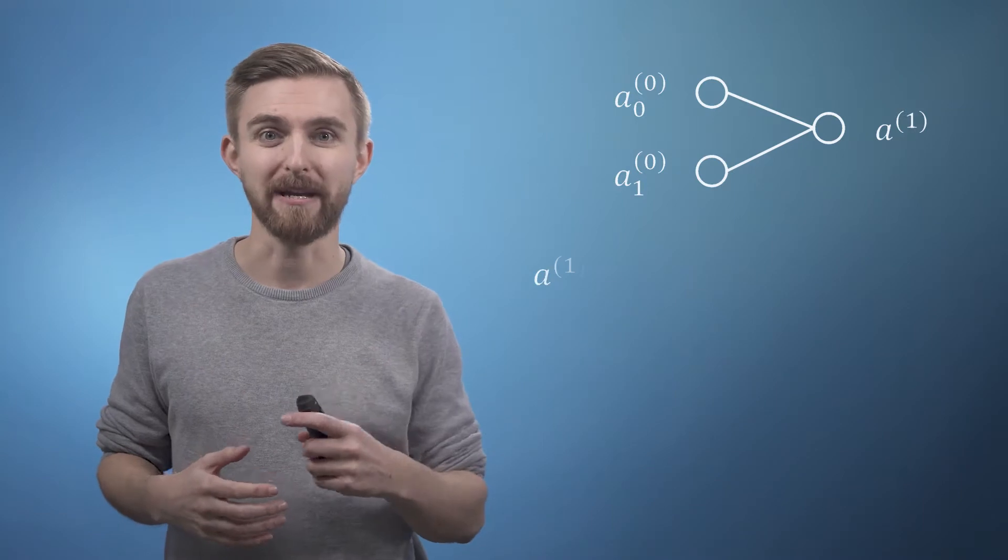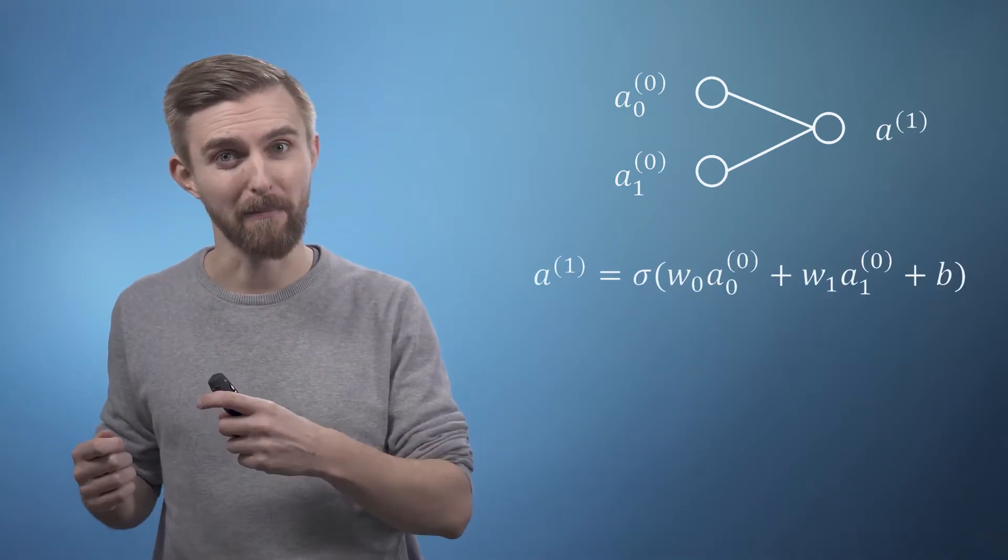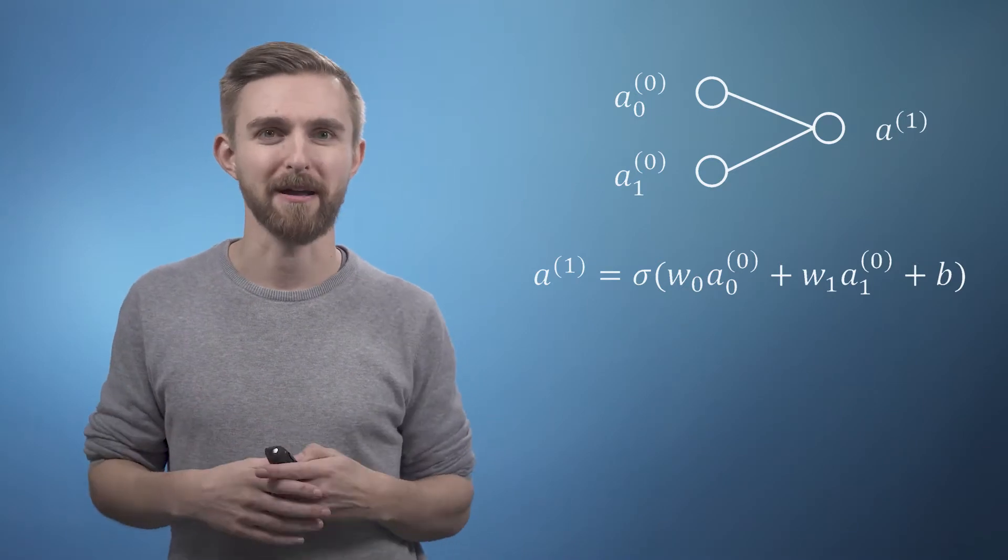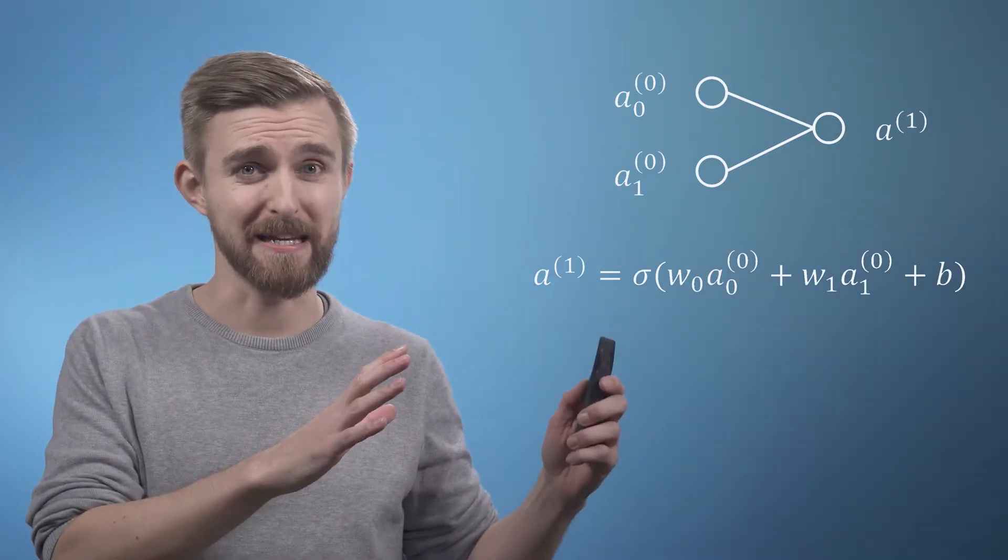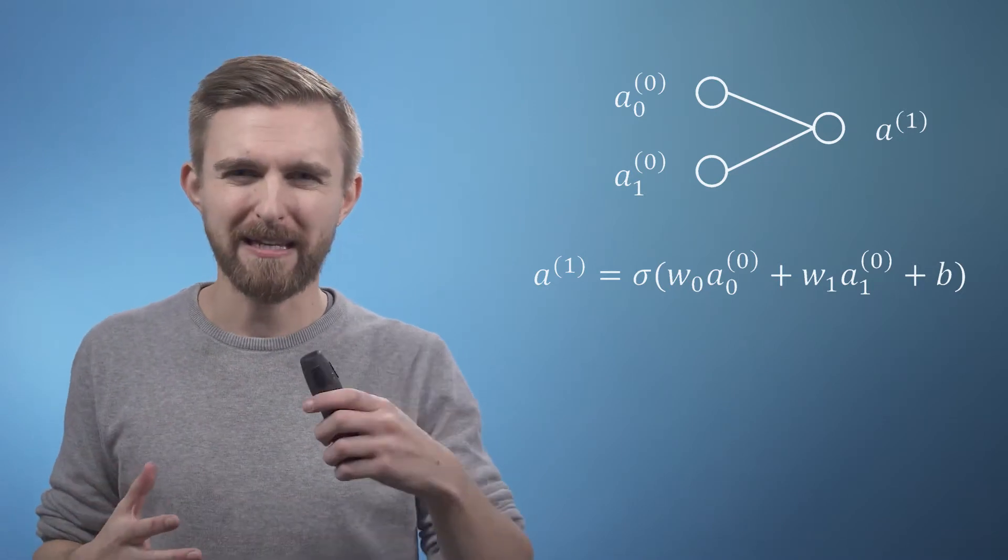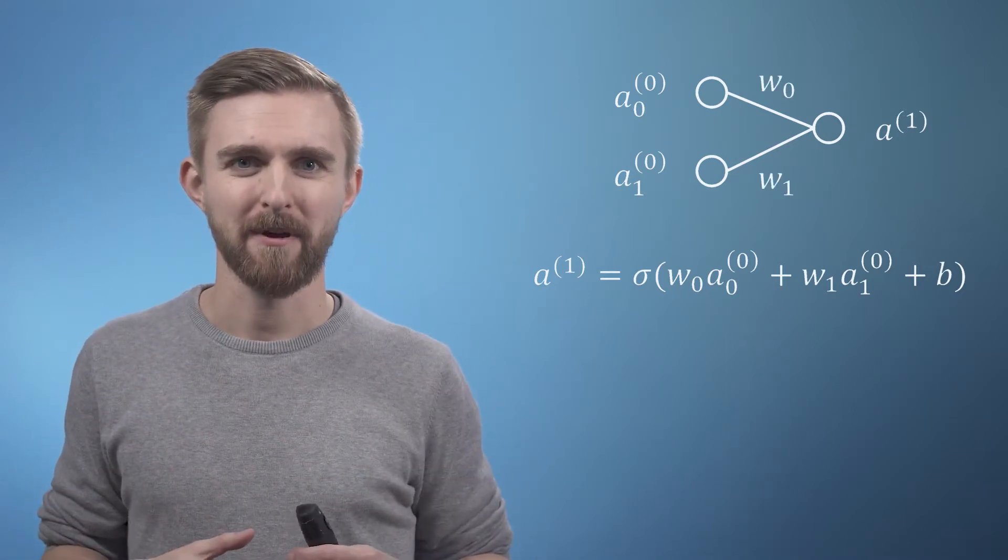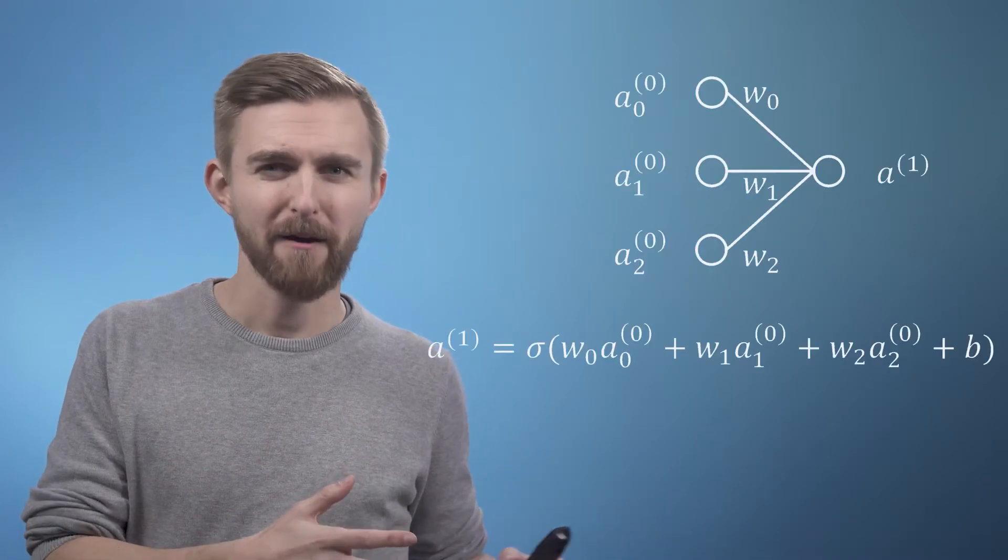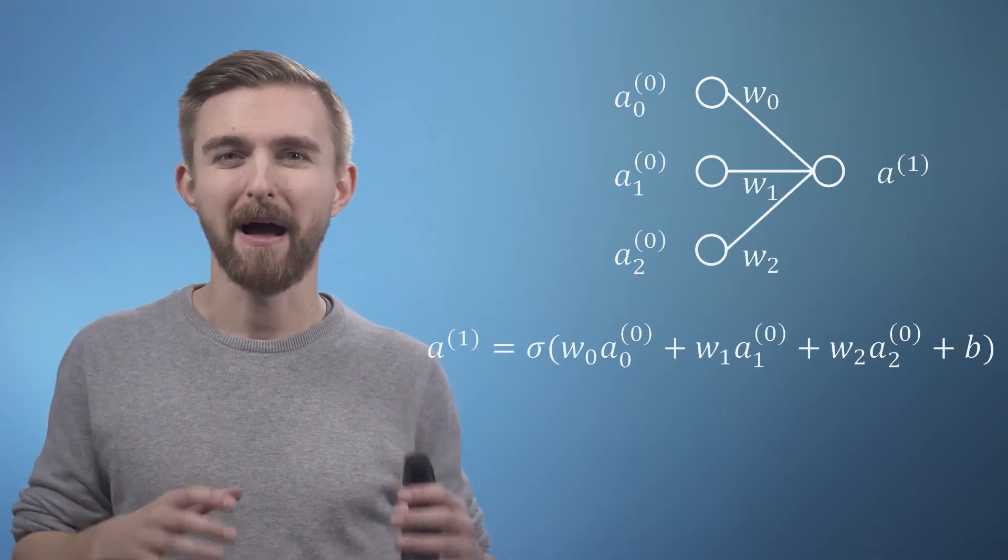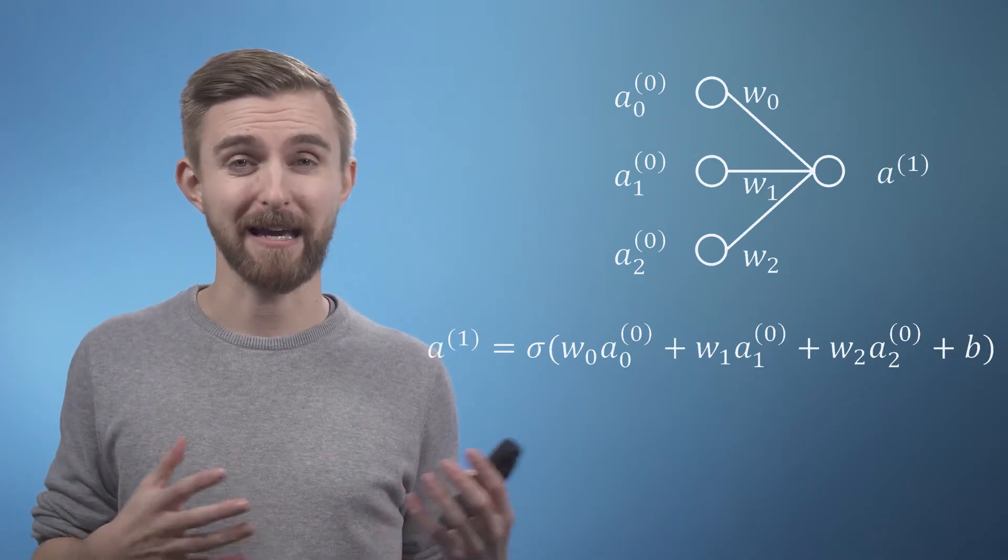To include this new input in our equation, we simply say that a1 equals sigma of the sum of these two inputs each multiplied by their own weighting plus the bias. As you can see, each link in our network is associated with a weight, so we can even add these to our diagram. Adding a third node to our input layer, a02, follows the same logic and we just add this weighting value to our sum. However, things are starting to get a bit messy.